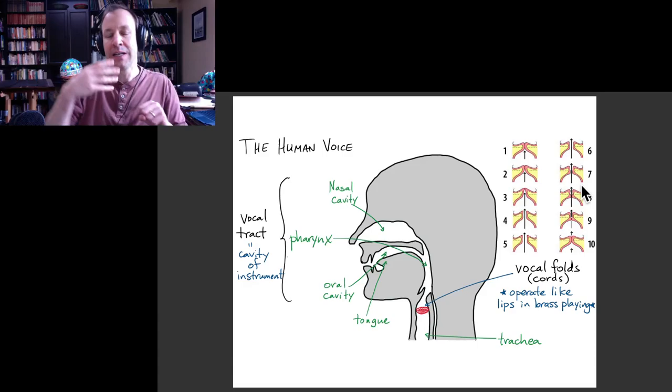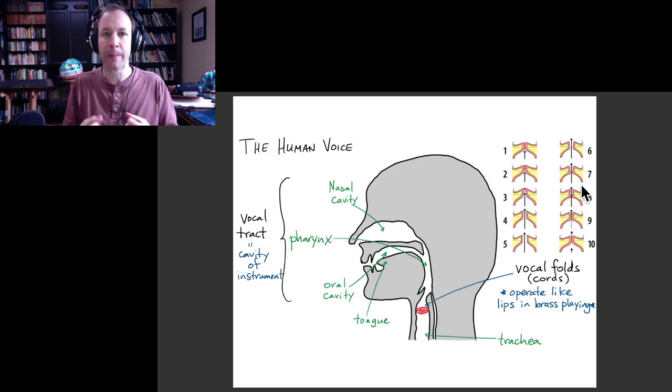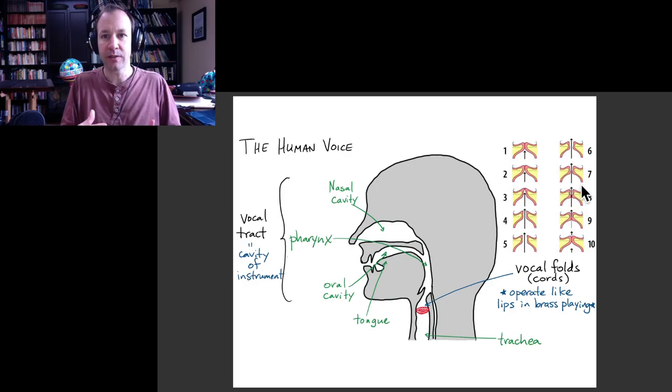So if you relax the vocalis muscles, then you can still stretch or shrink the vocal folds from the outside by these other muscles. Some combination of the action of these muscles results in either a higher frequency being produced, or a lower frequency being produced.